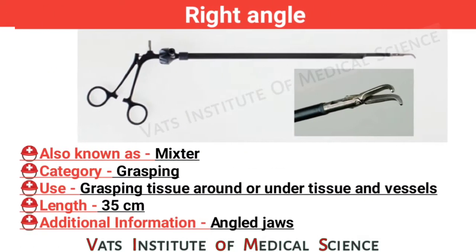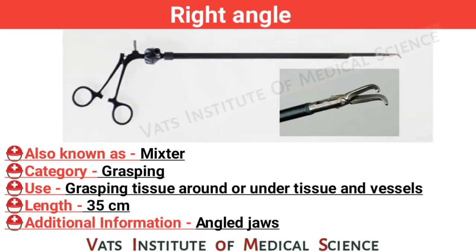Needle hook scissor. Category: cutting. Use: hooking around or under tissue and vessels. Length: 35 cm. Additional information: angled jaw.